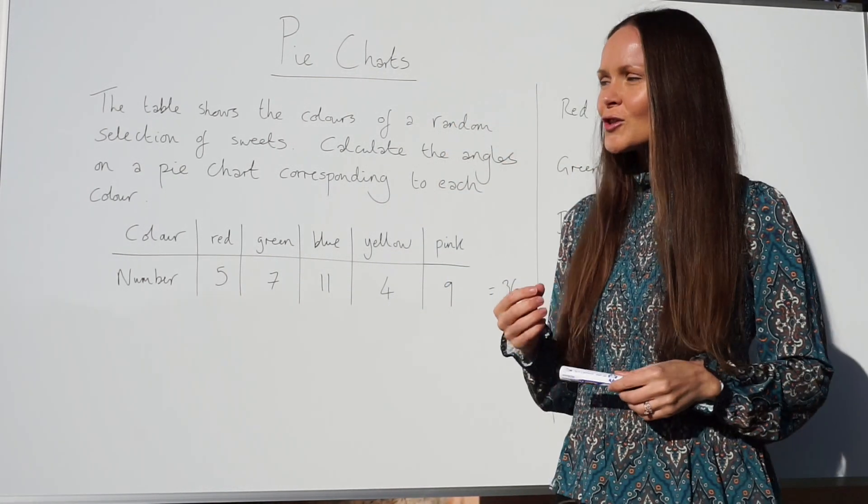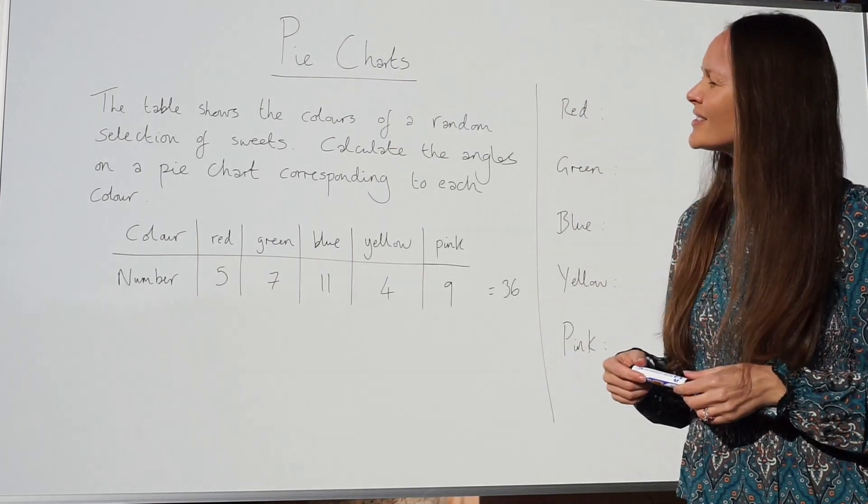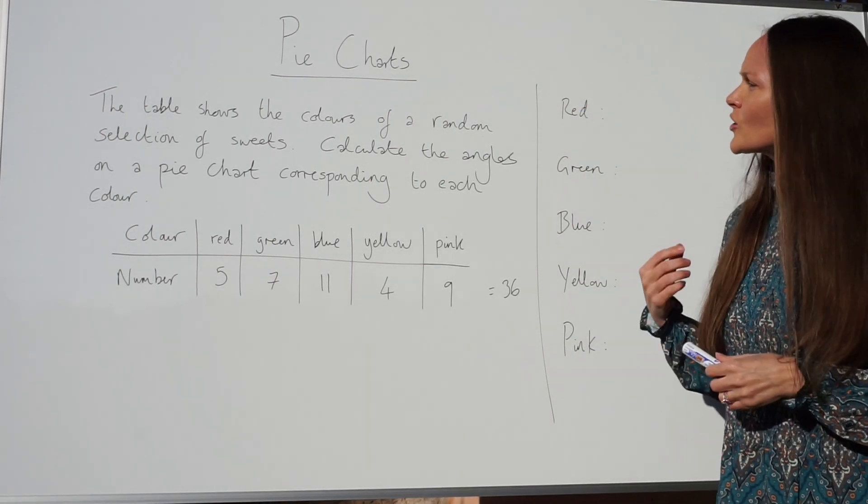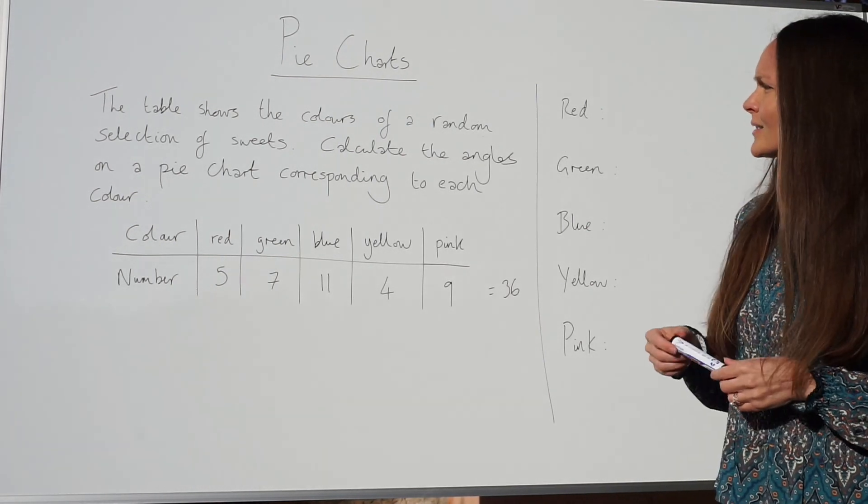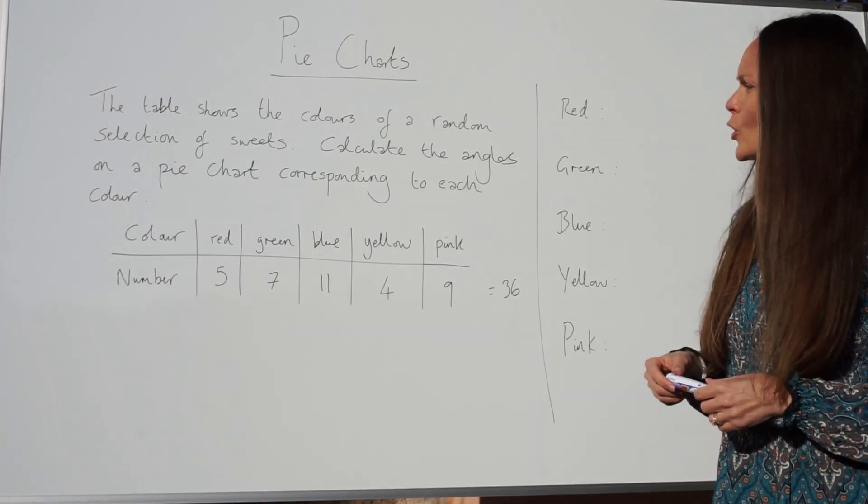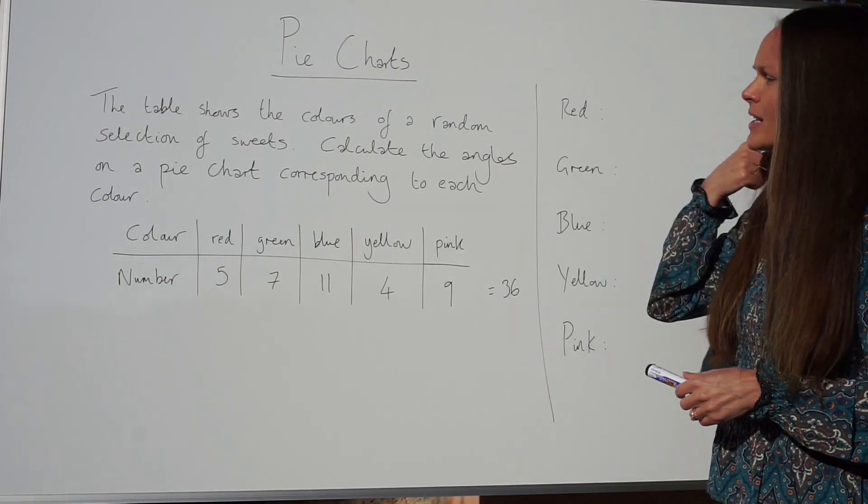Hey guys, in this lesson I'm going to show you how to calculate the angles in a pie chart. In this question, we have a table showing the colors of a random selection of sweets, and we must calculate the angles on a pie chart that correspond to each color. So let's just look at this table here.